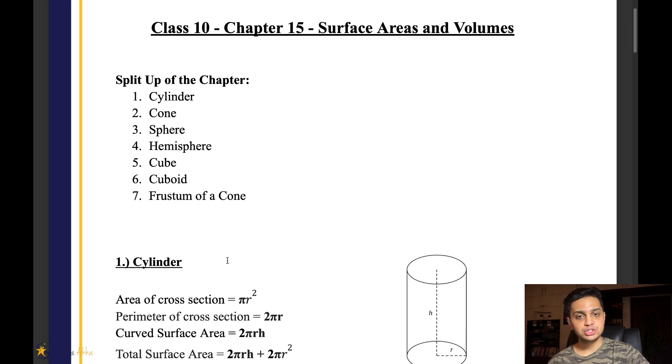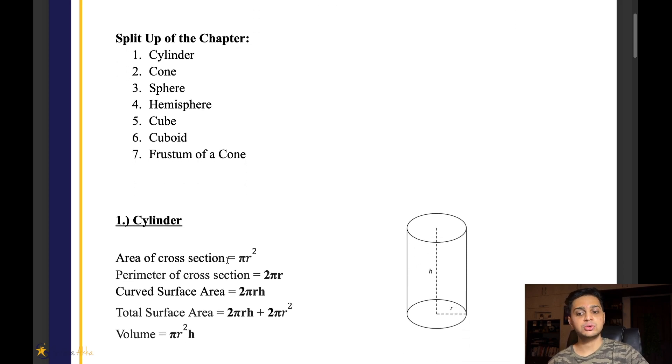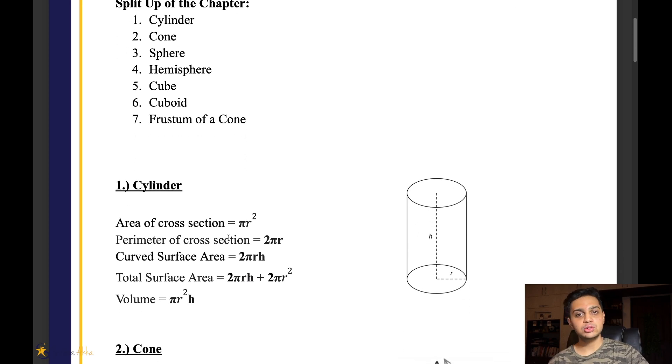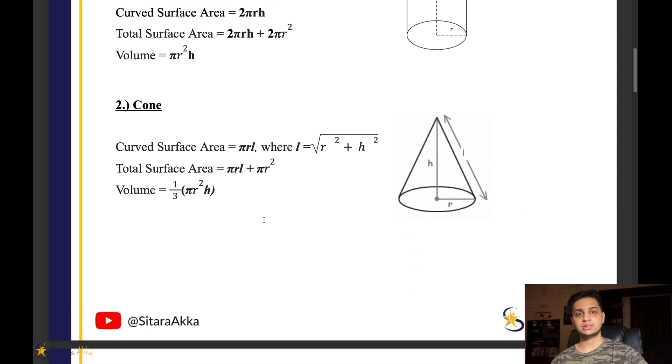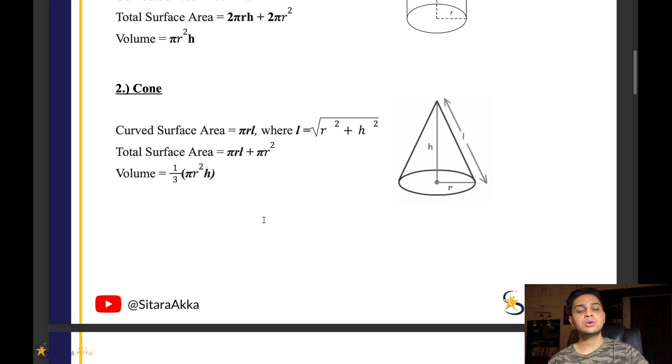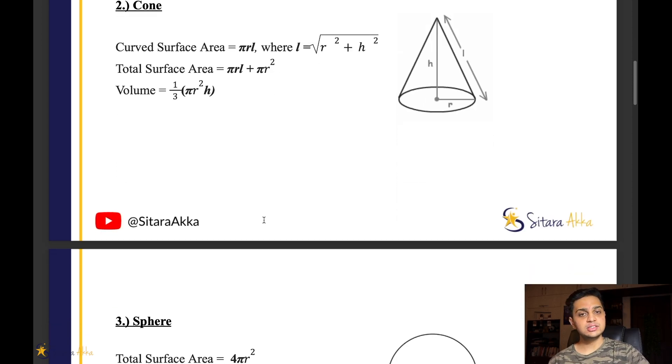There is cross section area, perimeter, curved surface area, total surface area, and volume. For every single shape, we will understand each of these. After revision, you can use these formula sheets to revise the chapter very quickly.